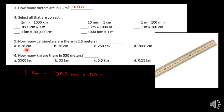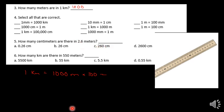Number five: how many centimeters are in 2.6 meters? Well, each meter is 100 centimeters. So 2 meters will be 200 centimeters, and 0.6 meters would be 60 centimeters. So that would be 260 centimeters total.